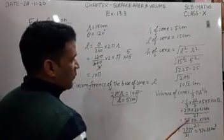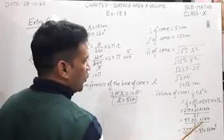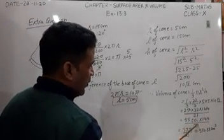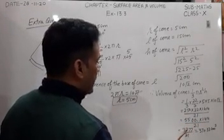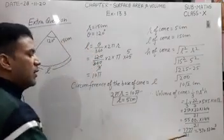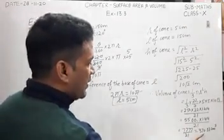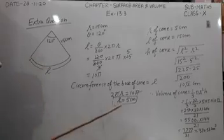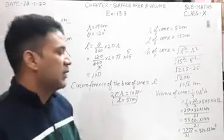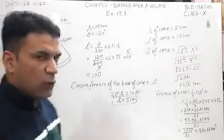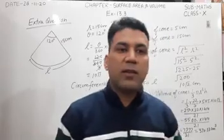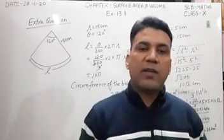The multiplication of 5500 into 1.414 is 7777 upon 21, and by dividing 7777 by 21, we get the required volume of the cone obtained by this sector: 370.33 cubic centimeters. I hope you understand the solution of this question. Thank you students, in the next video we start a new chapter.